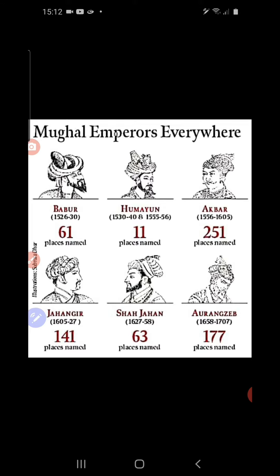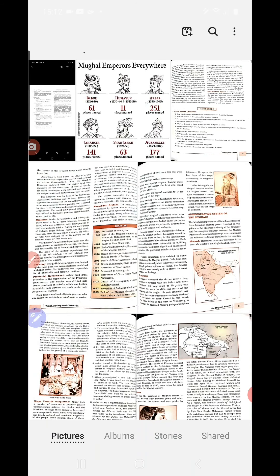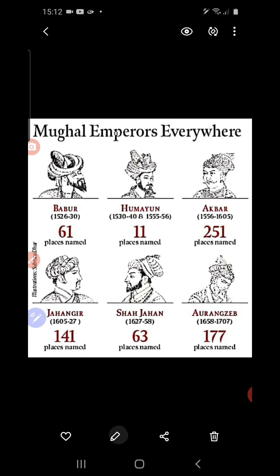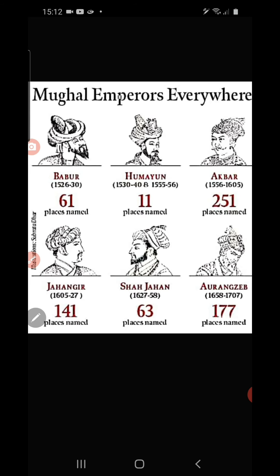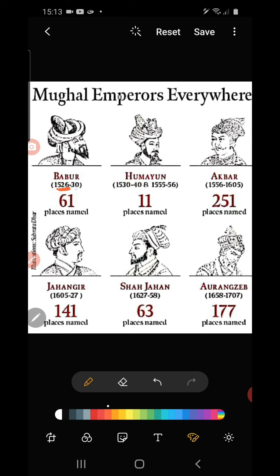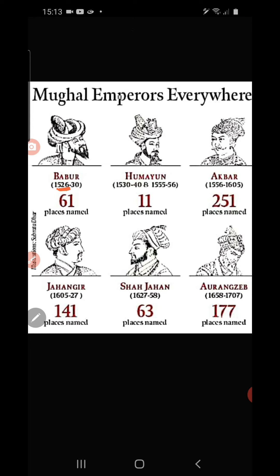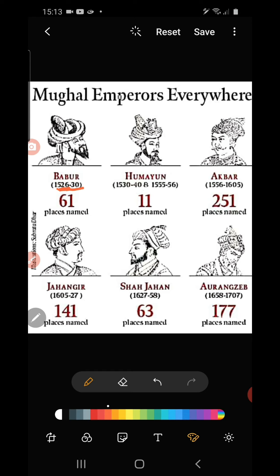Babur laid the foundation of the Mughal Empire in the year 1526 with the First Battle of Panipat, and he ruled from 1526 to 1530 — hardly four years. Then came his son Humayun, who ruled India from 1530 to 1540.